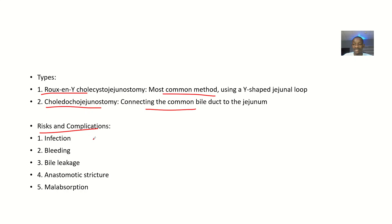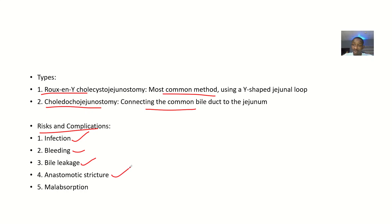For risks and complications: since this is a surgery, if you don't treat the wound properly after the operation, it could result in infections. It could also result in bleeding, bile leakage, and anastomotic stricture — where the site joining the gallbladder to the small intestine constricts if not done properly. This could also lead to malabsorption.